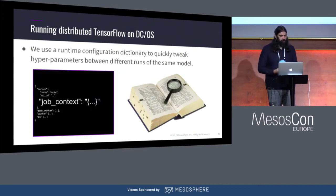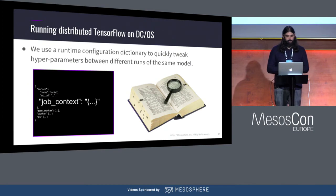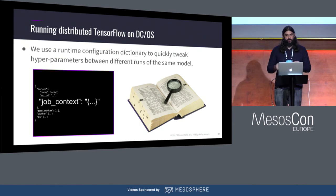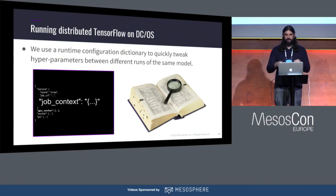The last thing is that we use a runtime configuration dictionary to quickly tweak any hyperparameters between different runs of the same model. If something isn't running as quickly as you want, you can just jump in and change these parameters on the fly without tearing down and redeploying the cluster from scratch. The SDK will automatically make sure to redeploy just those instances of workers and parameter servers that need updating.